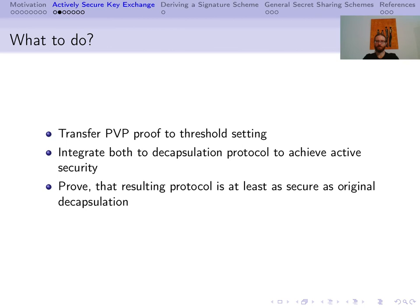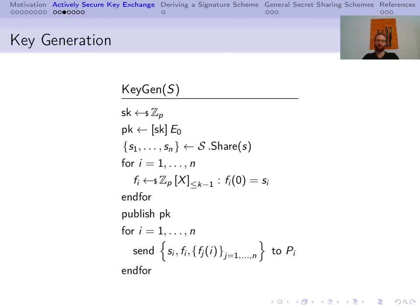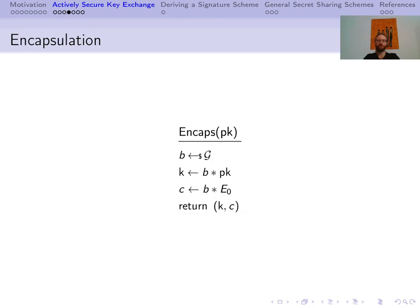For our key exchange mechanism, we need a key generation protocol, an encapsulation, and a decapsulation protocol. The key generation protocol looks quite different from the one shown before — we apply what we call a two-level sharing. The dealer samples the secret key and computes the public key as before. The secret key is then shared among P1 to Pn, but each share of the secret key is shared once more by the dealer, so that each shareholder receives his share Si of the secret key, the polynomial Fi with which his share was shared once more, and a share of each other share of the secret key. The encapsulation protocol stays unchanged.